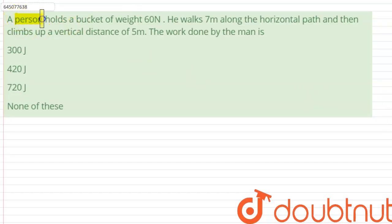Hello everyone. A person holds a bucket of weight 60 newtons. He walks 7 meters along the horizontal path, then climbs up a vertical distance of 5 meters. The work done by the man is